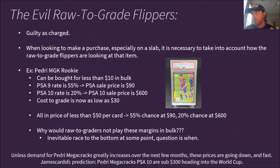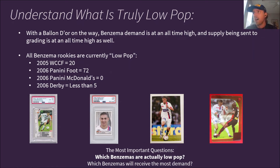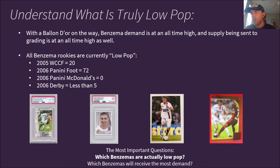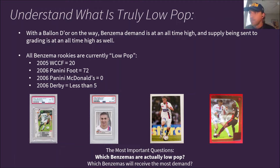With a Ballon d'Or on the way, Benzema is seeing demand at an all-time high and supply being sent to grading is at an all-time high too. Let's look at the Benzema rookies that are currently low pop. You have the 2005 WCCF at pop 20, the 2006 Panini Foot at pop 72, the Panini McDonald's currently at pop zero, and the 2006 Derby at less than five — so low pop it doesn't show up on the report. The important question is: which Benzemas are actually low pop, and which will receive the most demand?